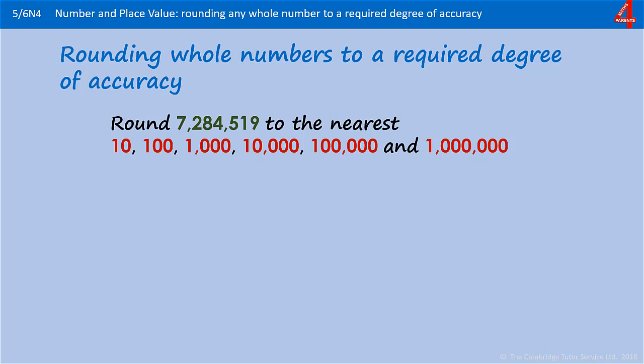Once children are able to round bigger whole numbers, they will be asked to round any whole number to a required degree of accuracy. So to give you an idea what this is, we've taken one number, 7,284,519, and we're going to round it to different multiples of ten each time.